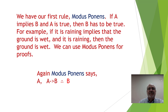We have our first rule — modus ponens: if A implies B and A is true, then B has to be true. For example, if 'it is raining' implies 'the ground is wet,' and it is raining, then the ground is wet. Modus ponens says: A, A implies B, therefore B.